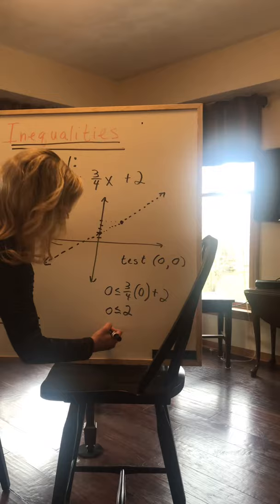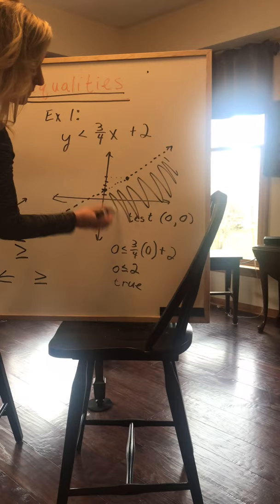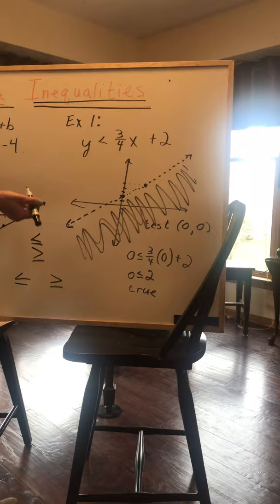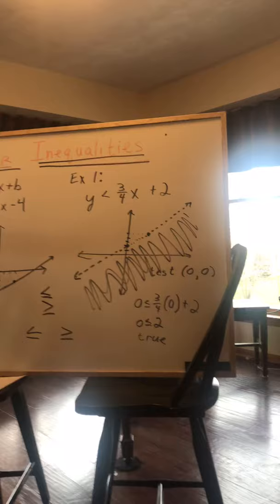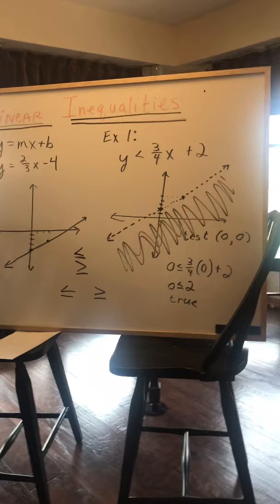0 is less than 2, and that is how you decide where you will shade. And you can just shade with your pencil. And what I'm doing, I am shading towards the point that I've chosen, that side of the inequality, because it's true. Had it been false, I would have shaded the other side. And as you'll do these, you'll be able to recognize when you're going to shade above, when you're going to shade below. But I wanted to give you a full example on what to do.